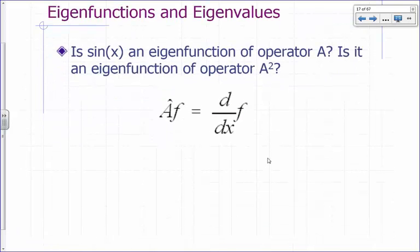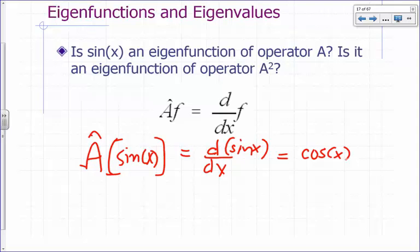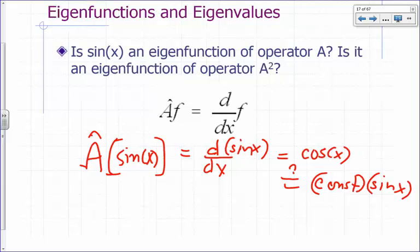So is sin(x) an eigenfunction of operator A? A hat of sin(x) is the derivative with respect to x of sin(x), which is cos(x). Is that equal to a constant times sin(x)? There's no constant you can multiply with sin(x) to get cos(x) for every possible value of x. So sin(x) is not an eigenfunction of operator A.